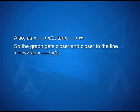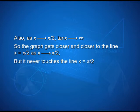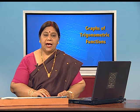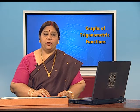As x tends to pi by 2, tan x tends to infinity, so the graph gets closer and closer to the line x = pi by 2 but never touches it. Since tan(−x) = −tan x, if (x, tan x) is any point on the curve y = tan x, then (−x, −tan x) will also be a point on it. This means the graph is symmetric in opposite quadrants.